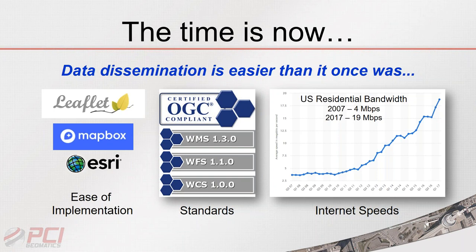Both open source and commercial tools have really come a long way. Leaflet is a popular open-source tool, Mapbox offers a freemium model, and Esri provides a commercial solution. The Open Geospatial Consortium has created standards — WMS, WFS (web feature service), and WCS (web coverage service) — making it possible for data to be published consistently and to move across different software platforms more easily than ever before.